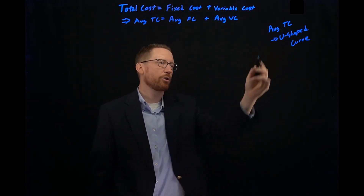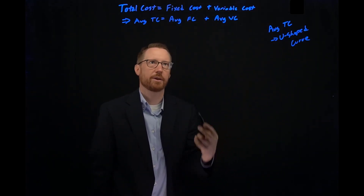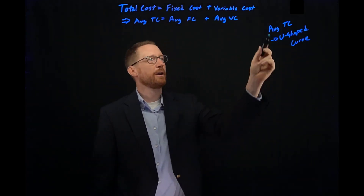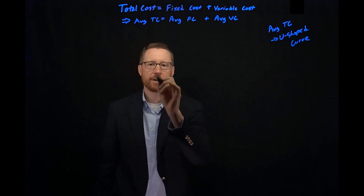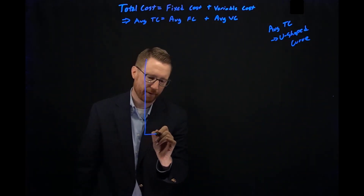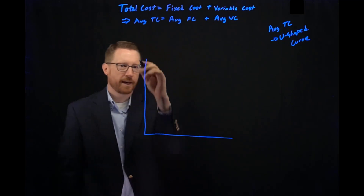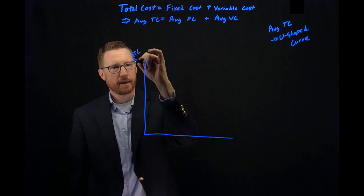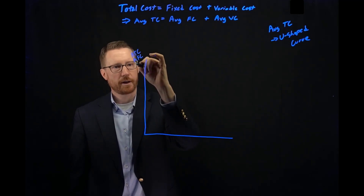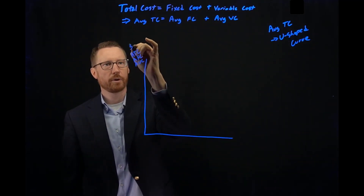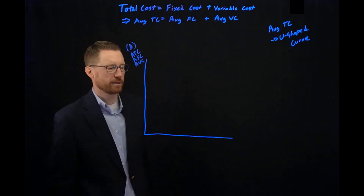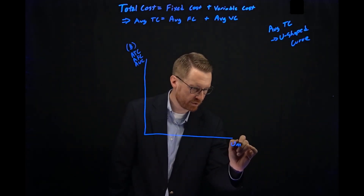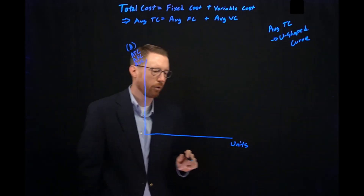Before we get to average total cost, what we really want to do is think about average fixed cost and average variable cost. Then when we put them together, we get our average total cost. So let's set up a graph. On our vertical axis we have average total cost, average fixed cost, and average variable cost — importantly, in terms of dollars. And we're comparing that versus units of output, or quantity.